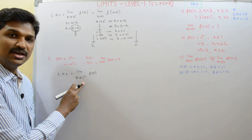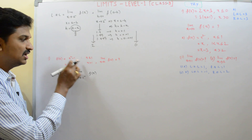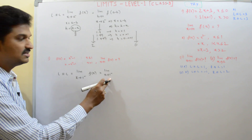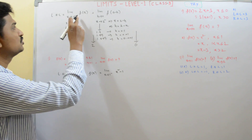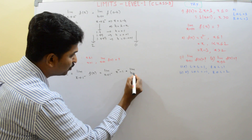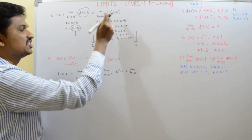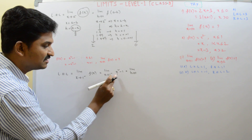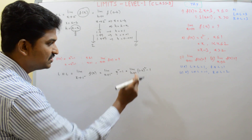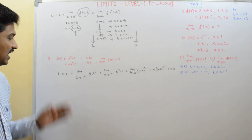x approaches to 1 from left means all x values are less than 1. Since x is less than 1, we need to choose the corresponding piece of the function. Now this is converted to the form: limit h approaches to 0, and wherever x appears in the function, x is replaced with 1 minus h. So we get: limit h→0 of (1 minus h) squared minus 1. By direct substitution, putting h equals 0: (1 minus 0) squared minus 1 equals 0. So the left hand limit of this function is 0.